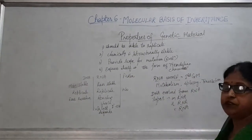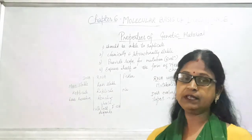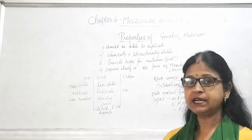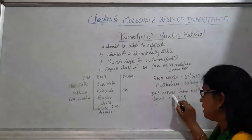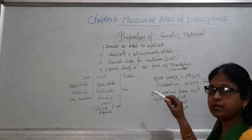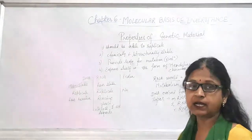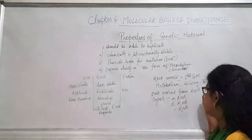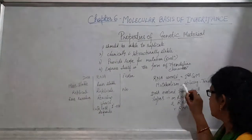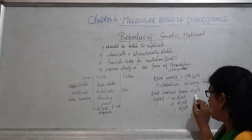In the RNA world concept, we know that the first genetic material was RNA. When life started, the genetic material was RNA, and DNA itself evolved from RNA. There are many proofs — RNA can undergo different types of metabolic activities such as splicing or translation. That is why DNA evolved from RNA.